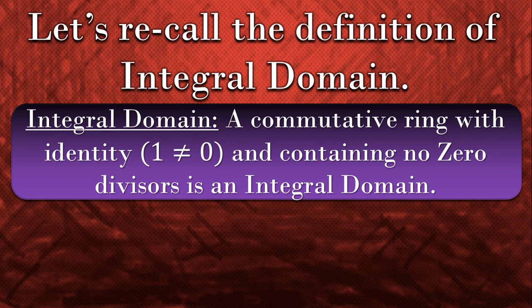Here, 1 is not equal to 0 means that multiplicative identity, that is 1, is different from additive identity, that is 0. So we have two different identities in this ring.